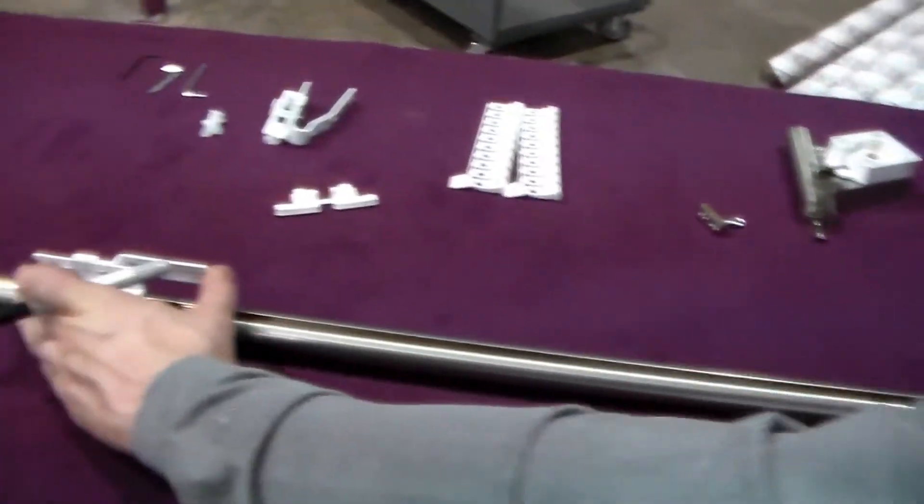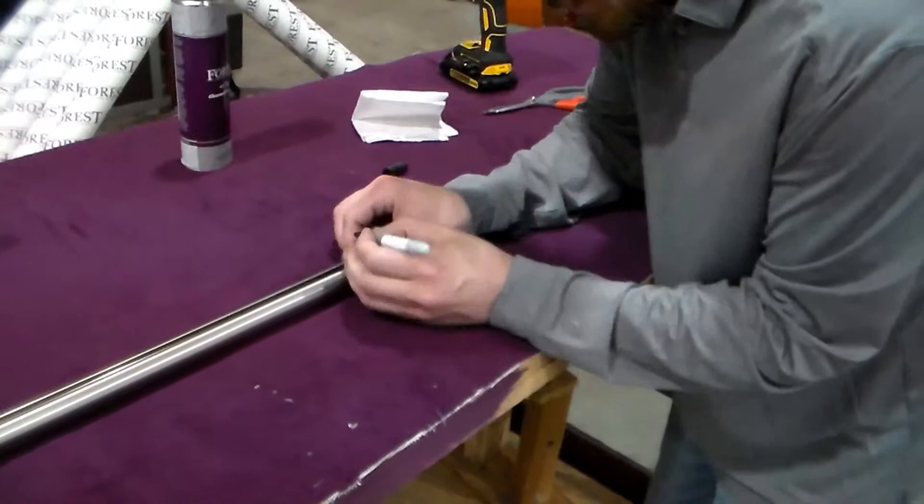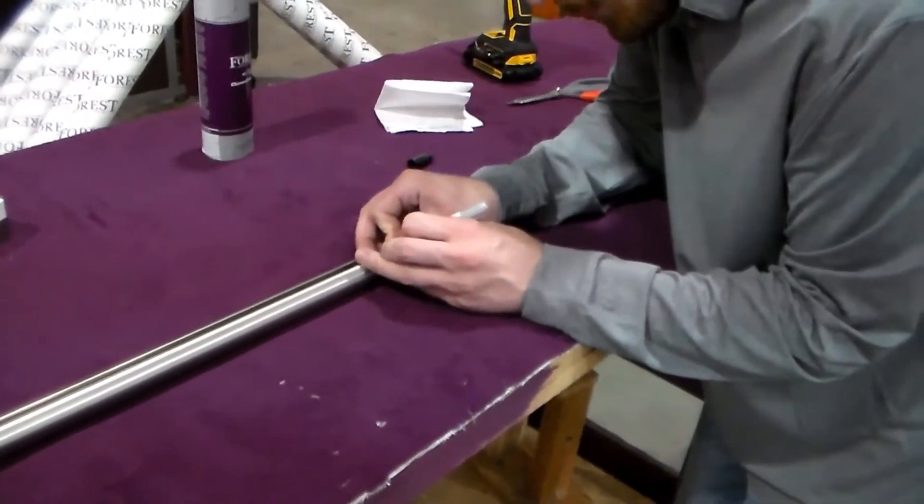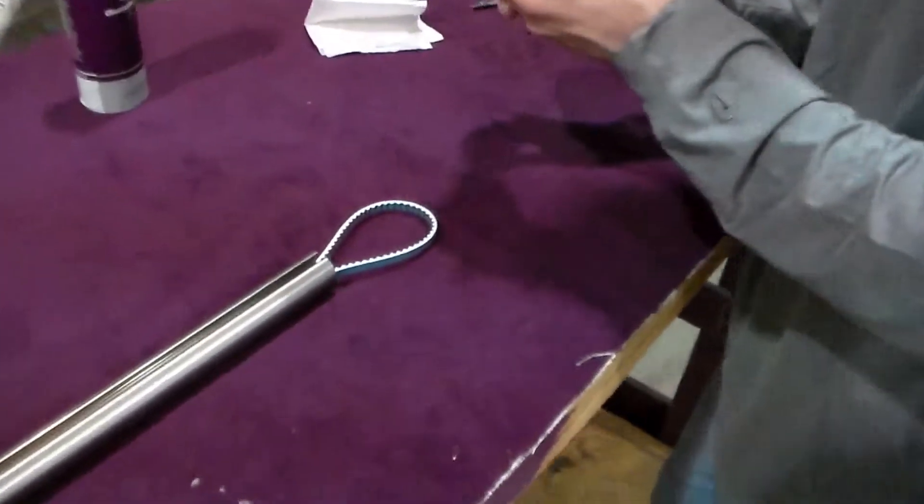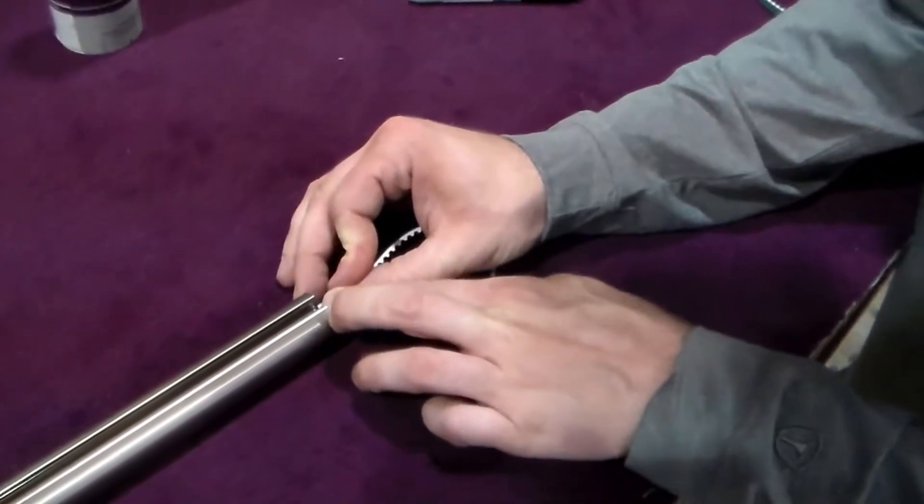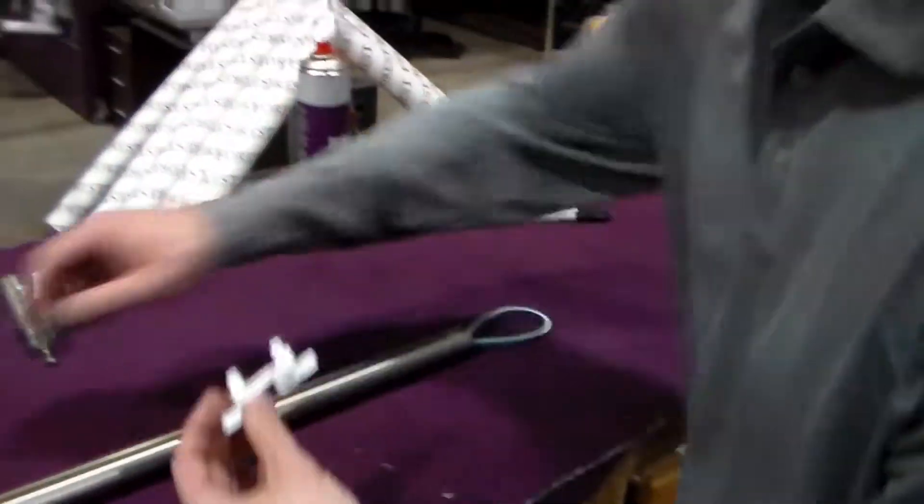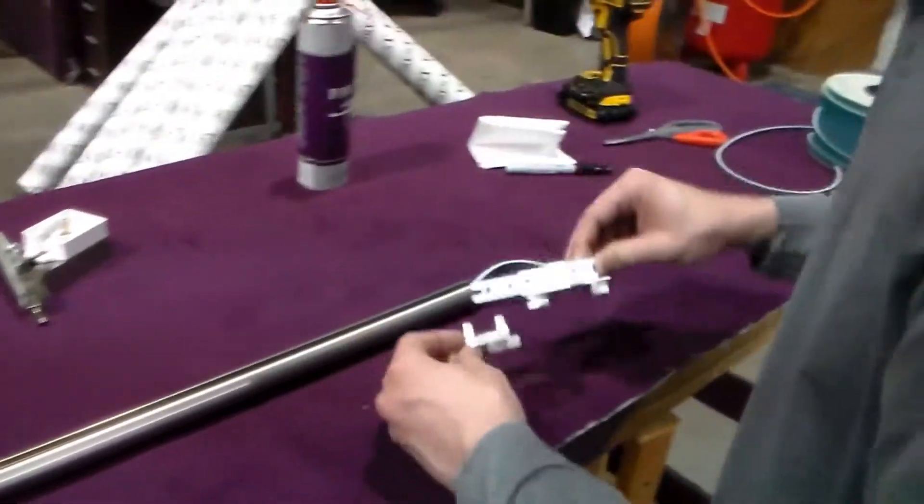With this master all the way to the end, that lets us know that we have a good position to mark our other master. So we'll put a mark right here, right at the end of the track. That will be a guide to where to attach our next belt connector and our other master.